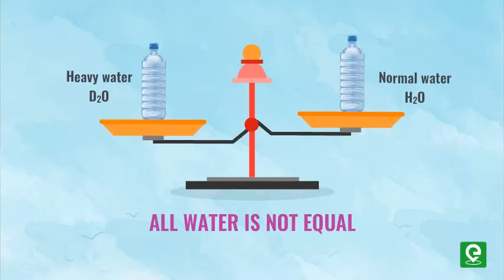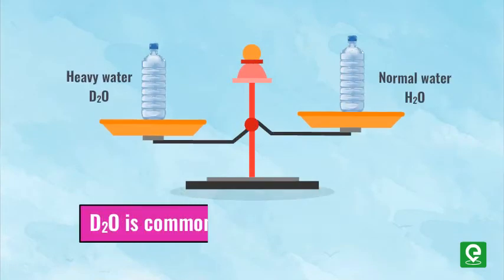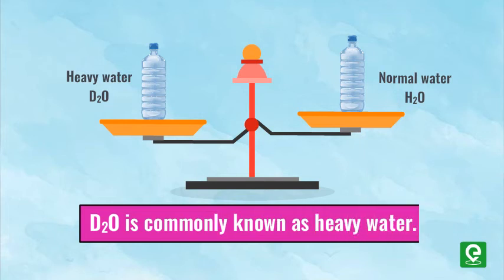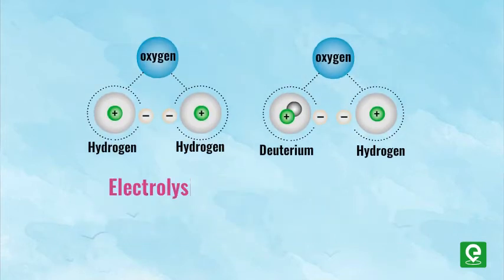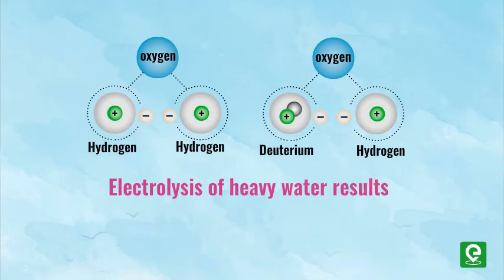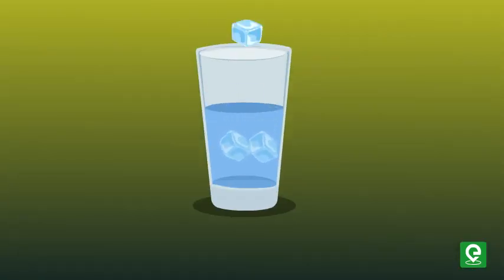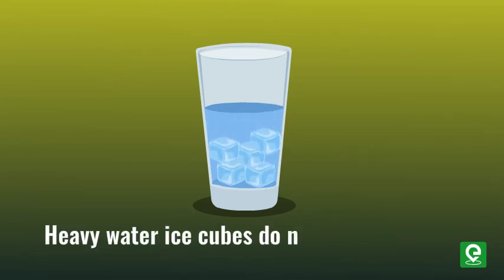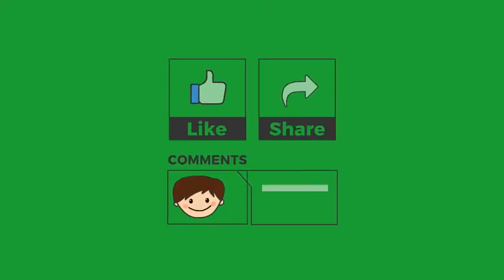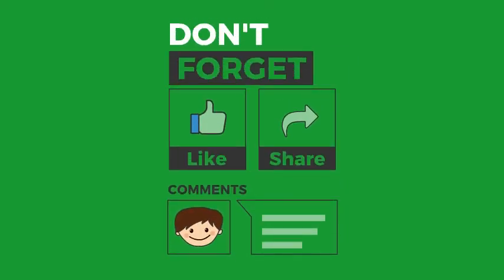What is heavy water? D₂O is commonly known as heavy water. Electrolysis of heavy water results in deuterium (D₂), which is an isotope of hydrogen with one neutron in its nucleus. An interesting fact: ice cubes formed by heavy water do not float in ordinary water.